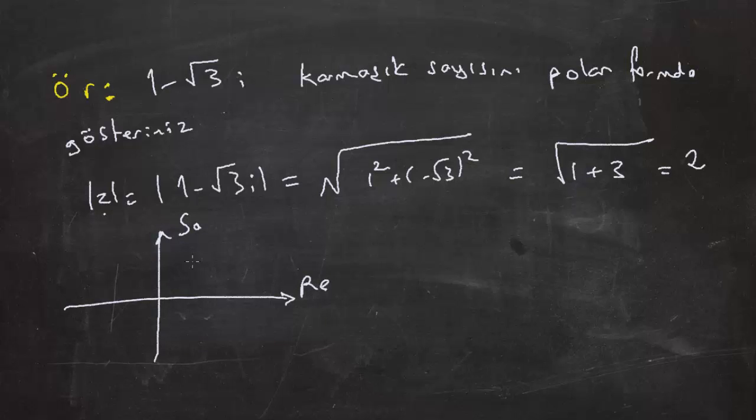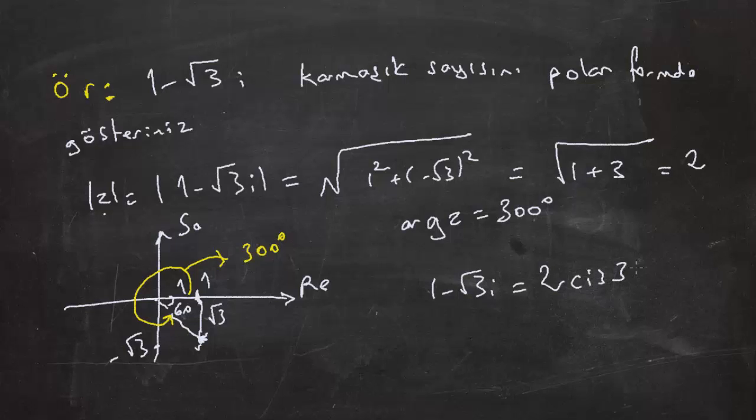Şimdi sayının nereye denk geldiğini şöyle görebiliriz arkadaşlar. Real'de 1'i işaretliyorum, sanal'de -√3'ü işaretliyorum. Sayı buraya denk geliyor. Şimdi burada bir üçgen var. Üçgenle ilgili şunu biliyorum: şurası √3, burası 1. Şimdi burada tabii ki bu üçgenin 30-60-90 üçgeni olduğunu görmem gerekiyor. Ve şu açı 60. Böyle olunca şu açı, reel eksenle pozitif yönde yapılan açı 300 derece olmuş oluyor. Ve bu da şunu sağlıyor: arg(z) eşittir 300 derece. Yani aslında biz sayımızı 1 - √3i'ye aynı zamanda 2 cis 300 diye de yazabiliyormuşuz.